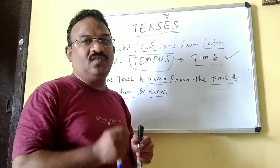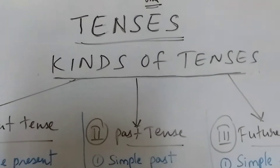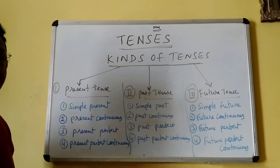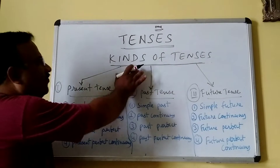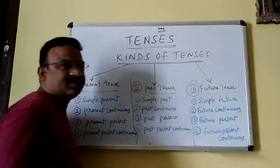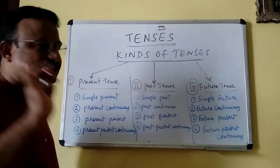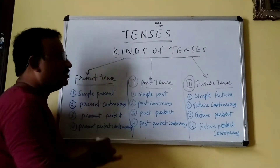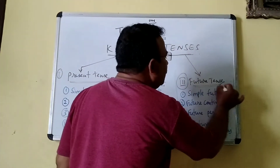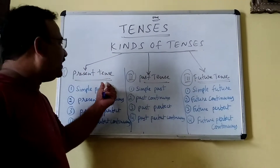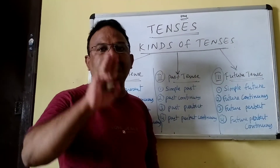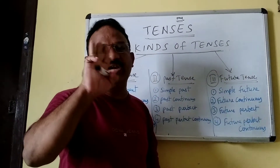How many kinds of tenses are there? Mainly, there are three kinds of tenses. One is present tense, the second one is past tense, and the third one is future tense. In English, there are mainly three kinds of tenses: present tense, past tense, and future tense.